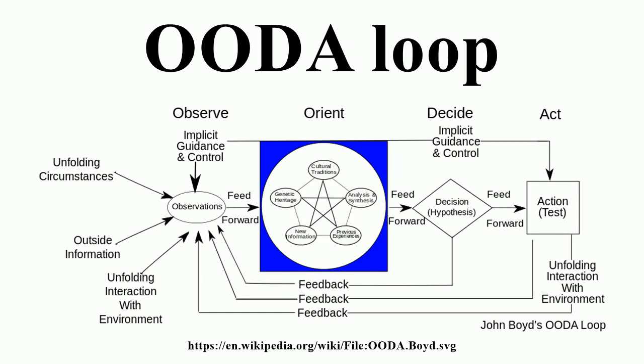The phrase OODA loop refers to the decision cycle of observe, orient, decide, and act, developed by military strategist and USAF Colonel John Boyd. Boyd applied the concept to the combat operations process, often at the strategic level in military operations. It is now also often applied to understand commercial operations and learning processes. The approach favors agility over all power in dealing with human opponents in any endeavor.